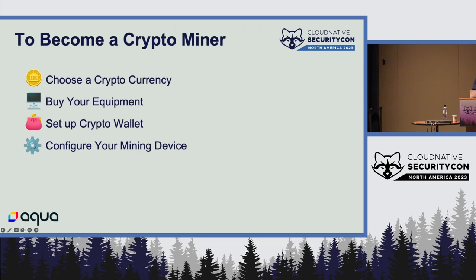Let's see how easy it is to become a crypto miner. All you need is basically four things. First, you need to choose your cryptocurrency coin — there are multiple coins, each with its own capabilities and features. Then you need to buy your equipment, and the stronger the equipment, the more efficiently you can mine. But if you're a bad actor, you can just hijack systems and run your miner. You'll also need a crypto wallet — it's free and open source — and then choose and configure your mining software. You can do all these steps in just a few minutes.